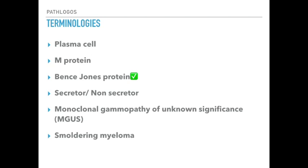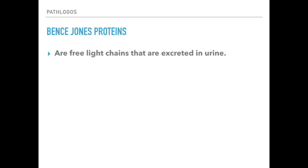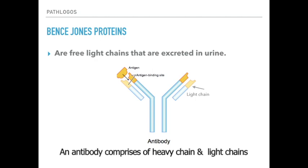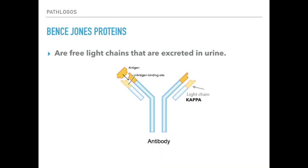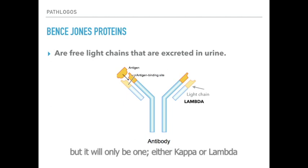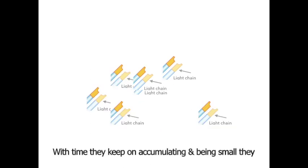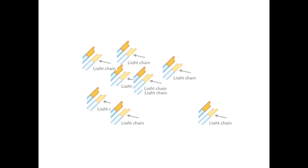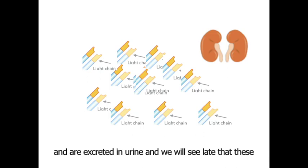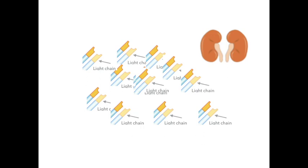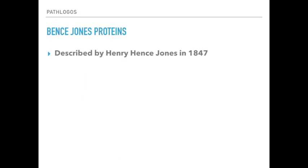The next term we'll discuss is Bence-Jones protein. Bence-Jones proteins are free light chains that are excreted in urine. An antibody comprises of heavy chains and light chains, and Bence-Jones proteins are the free light chains excreted in urine. The light chain could be kappa or lambda, but it will only be one — either kappa or lambda — because they are monoclonal. Bence-Jones proteins were described by Henry Bence-Jones in 1847.